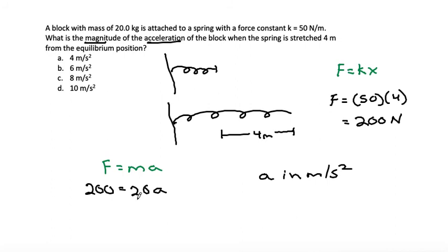From here, we can solve for our acceleration by dividing both sides by 20, and that will cancel out to give us 200 divided by 20 is 10, so the acceleration would be 10 meters per second squared.